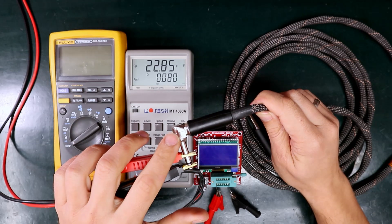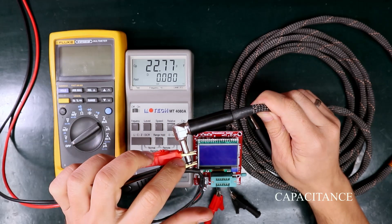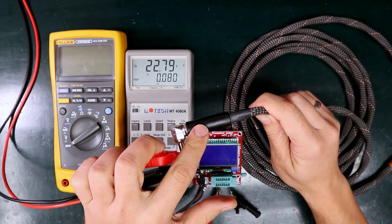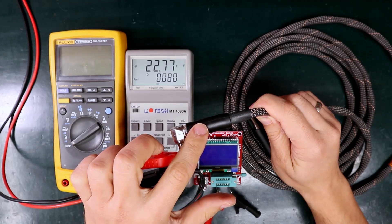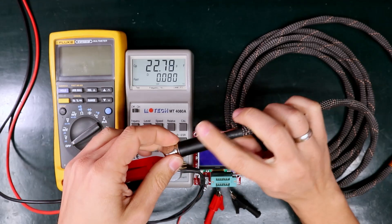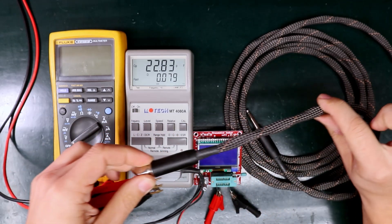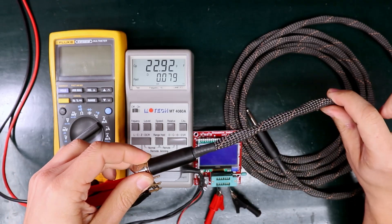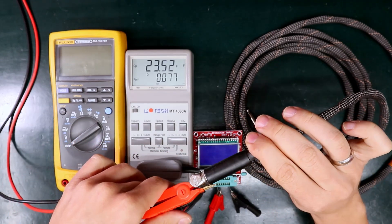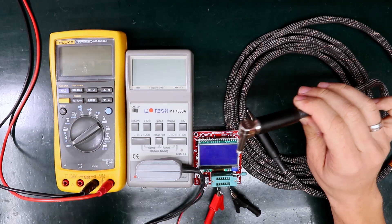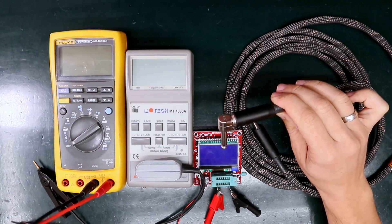Now it reads about 22 pF which clearly indicates that the problem is somewhere in that area of the cable. Since the connectors also have some capacity, it could be the solder joint inside here or it could be somewhere in that area. So let's do the same test using the Fluke multimeter.